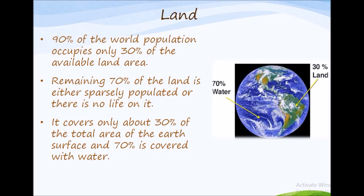Now here is something interesting and surprising. Do you know that 90% of the world's population occupies only 30% of the available land area? Is that a hopeful statement? We will find out soon. The remaining 70% of the land is either sparsely populated or there is no life on it. It may sound unbelievable, but billions of us live on the planet Earth and we cover just 30%. Land is among the most important natural resources — it covers only about 30% of the total surface area of the Earth, while 70% is covered with water.